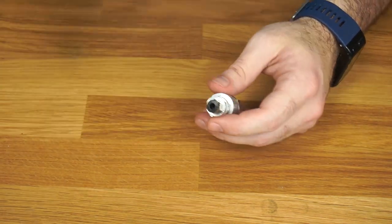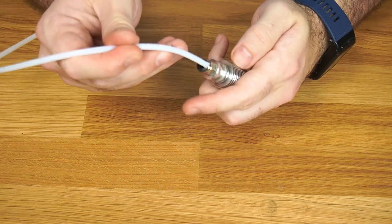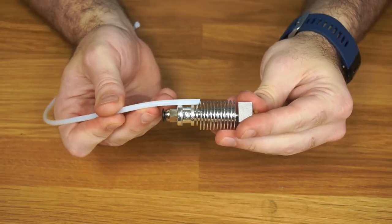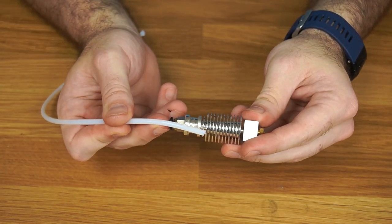And then when we put our Bowden tube in, we can just push it all the way down as far as we can. And it's going to rest up against the heat brake.